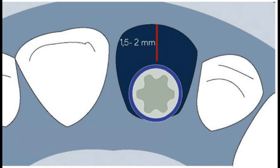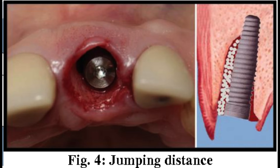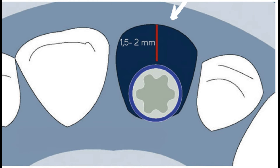Now why is it important? It is important because the jumping distance determines the need for bone graft. If jumping distance is more than 2 mm, then bone graft is very important and crucial; otherwise, the buccal wall will collapse and there will be a buccal defect of the wall.